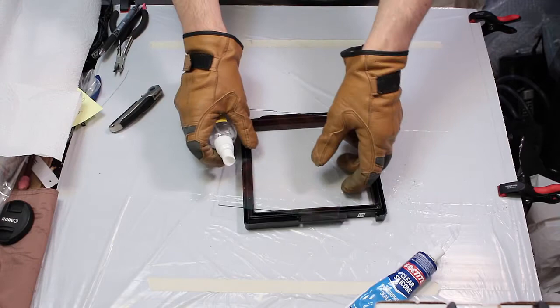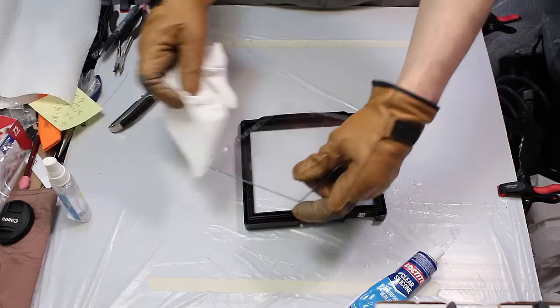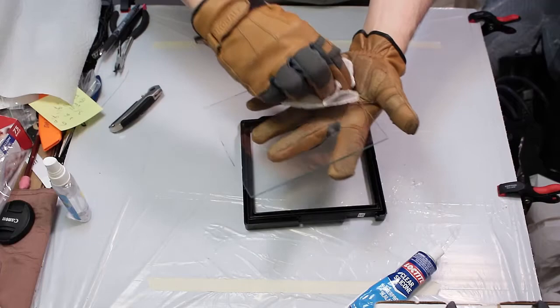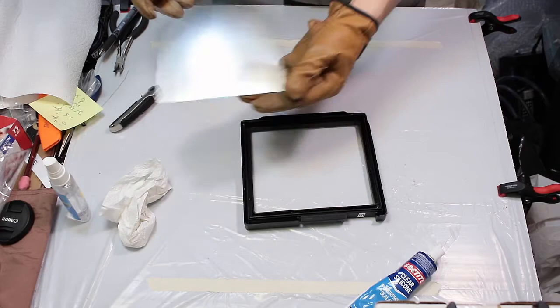And that's why we go even the next step and we take the isopropyl alcohol and you're just going to want to spray the glass panel on the side that you're going to adhere the silicone to. And you're just going to wipe that with a nice clean paper towel and make sure that you get any oils from your fingers or any other contaminants off of the glass. And then remember that the side that you cleaned, that's the side that you're going to flip over and put onto the silicone.